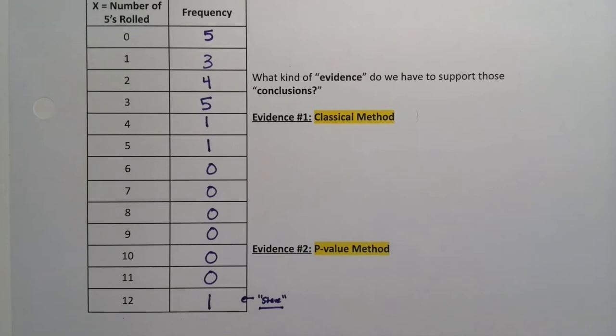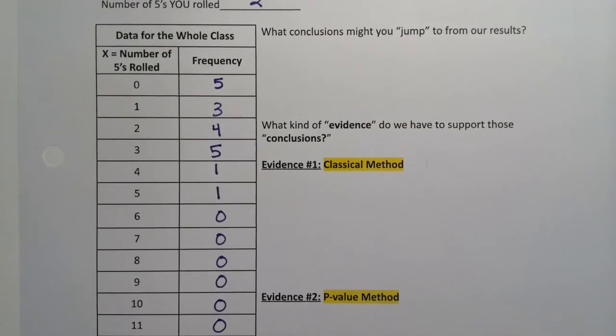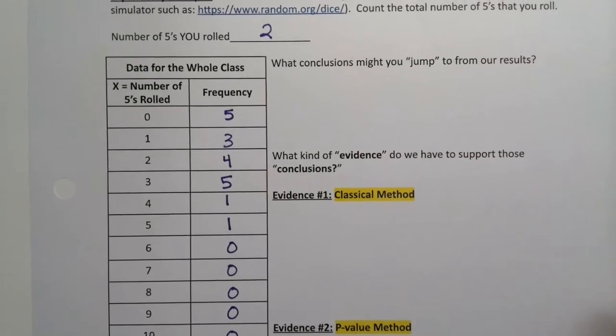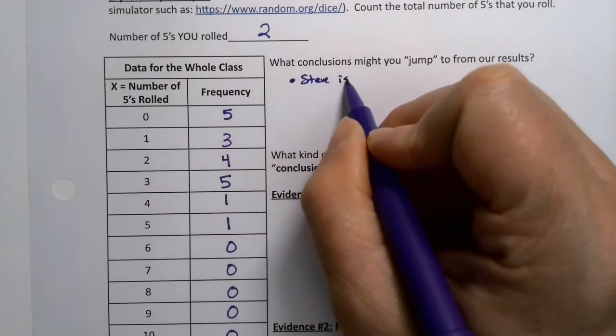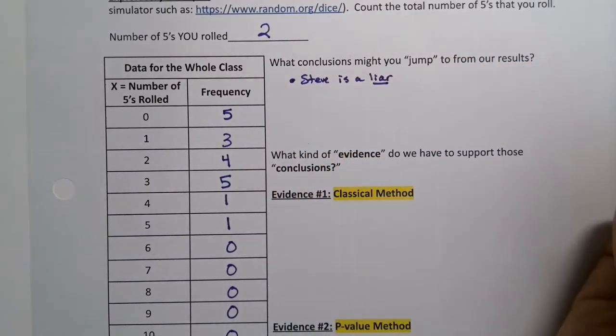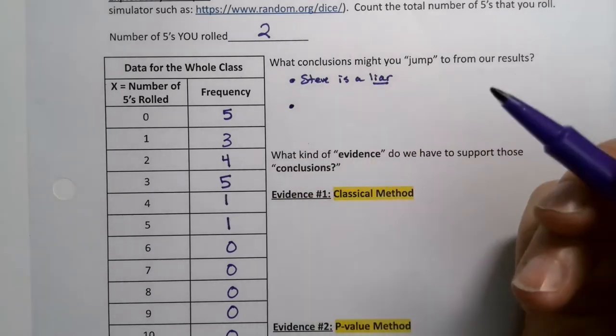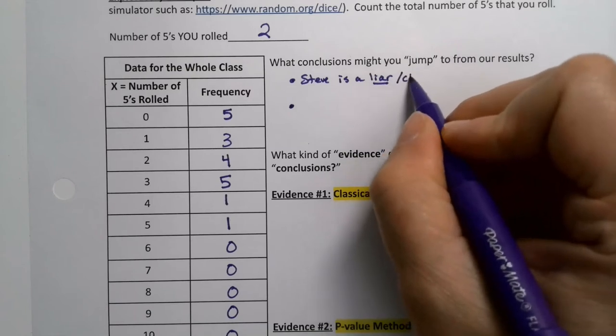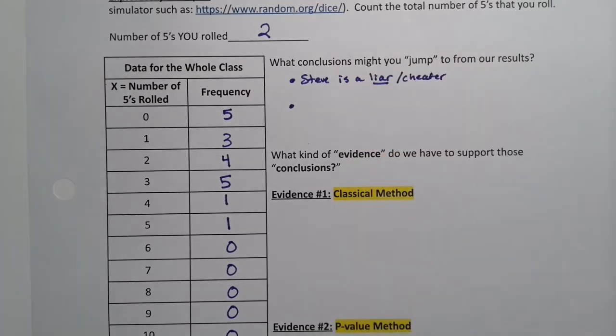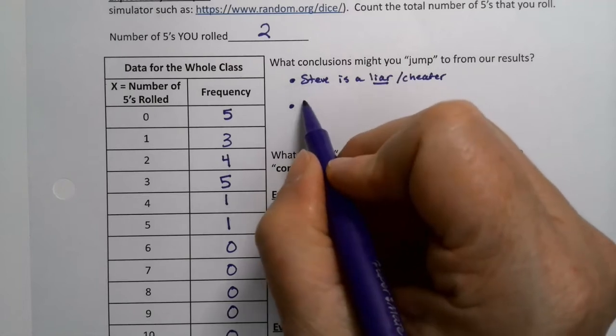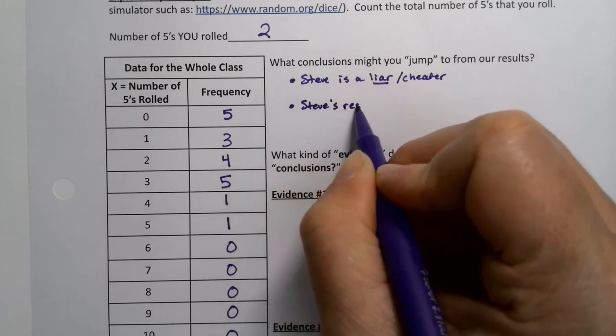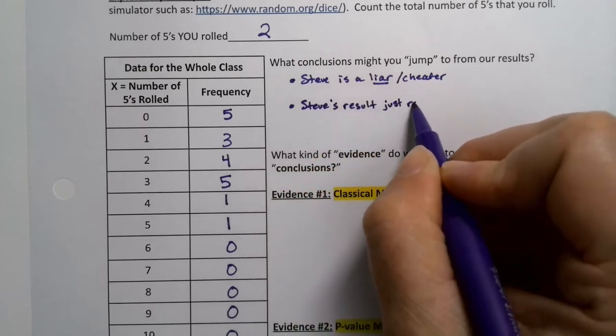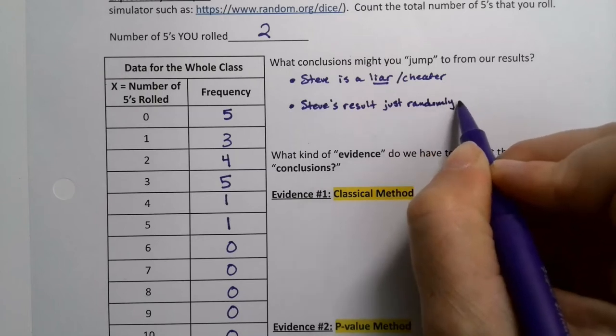Now, what are some conclusions we could draw from these results? In class when this happens, students usually come up with some things pretty quickly. So one, Steve is a liar. And this happens actually a lot. When it's a male student especially, they'll be like he's a liar, he's a cheat. And then some people give Steve the benefit of the doubt. Steve's result just randomly happened. It's possible.